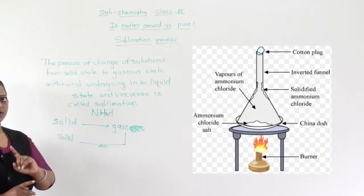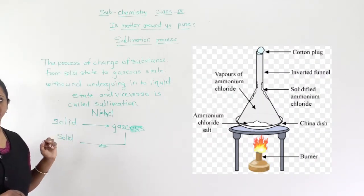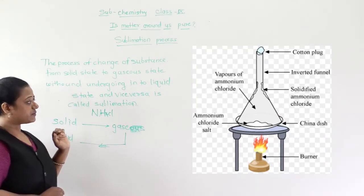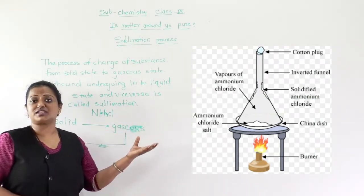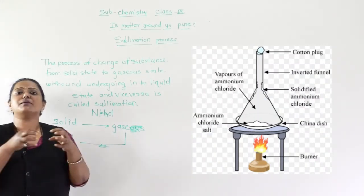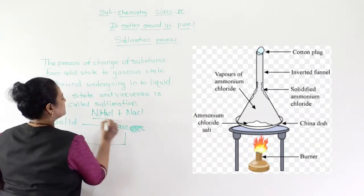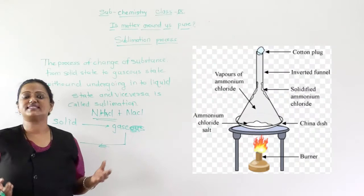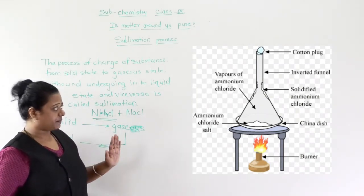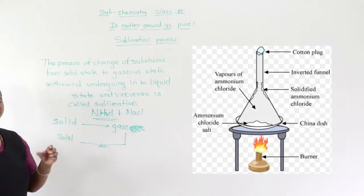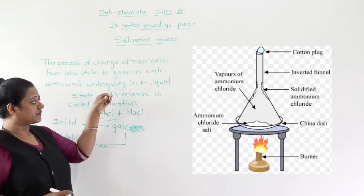Here I will explain with an example. You can see there is a tripod stand — I have already shown you this in the chemistry laboratory. Below the tripod stand there is a Bunsen burner, above it a china dish, and in that china dish the sample is kept. My sample is a mixture of NH4Cl and NaCl. Over the china dish I have placed an inverted funnel.